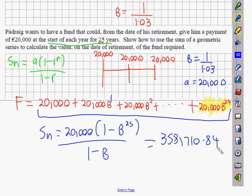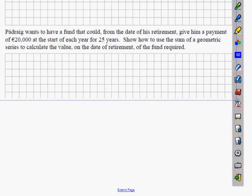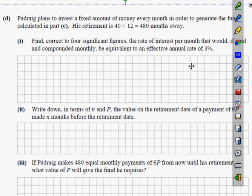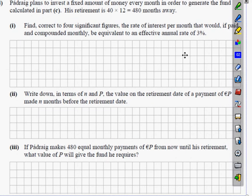So it's going to be B^25 and then it's 1 minus B. You put that into your calculator and you get 358,710.84. Yes, Sean. In the solution. So that brings on to the next part of the question. Padraig invested a fixed amount of money every month to generate this fund. To foresee the figures, the rate of interest per month that if paid and compounded monthly would be the equivalent of an annual rate of 3%.